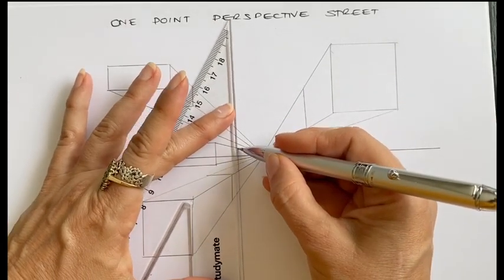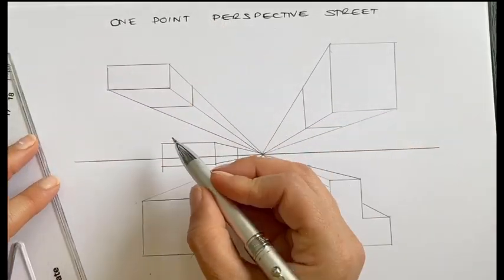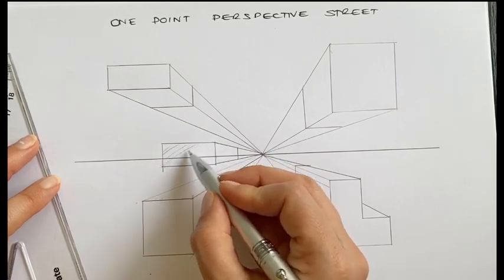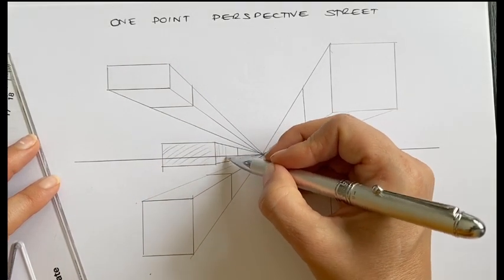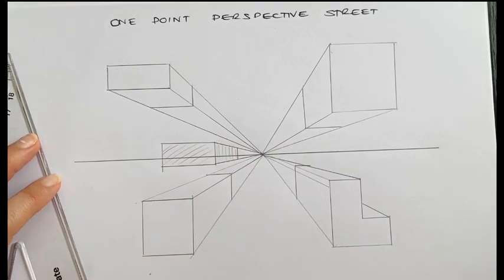you come into the centre like so. And then you need to pick a depth for the building. So if I put a little bit of shading on that so you can see it a bit better. That's the bottom of the building there.